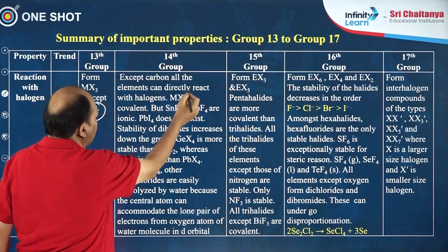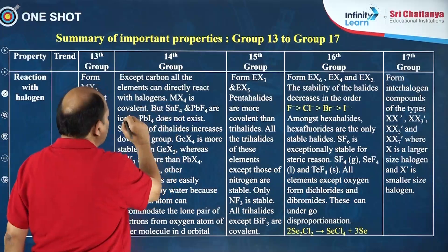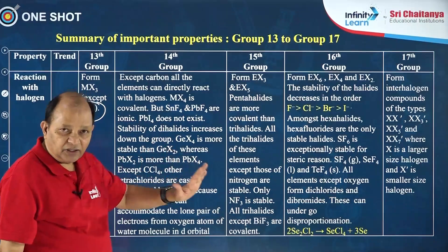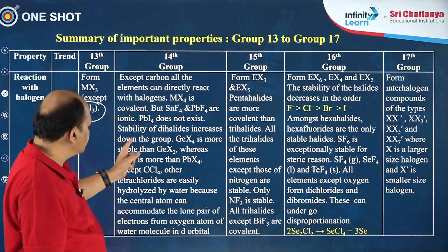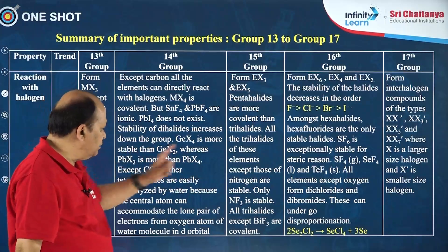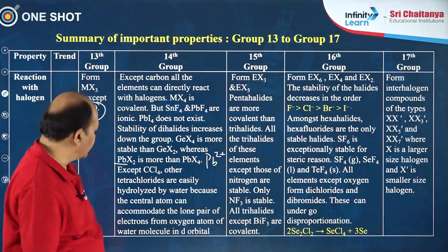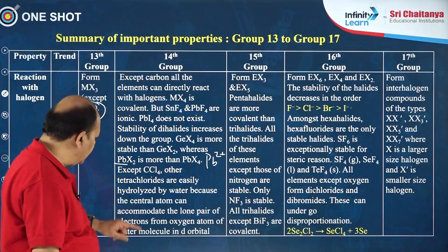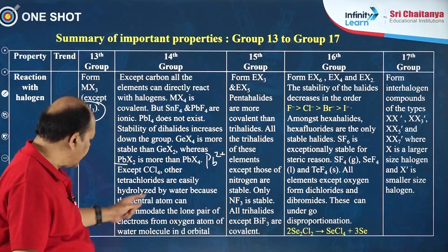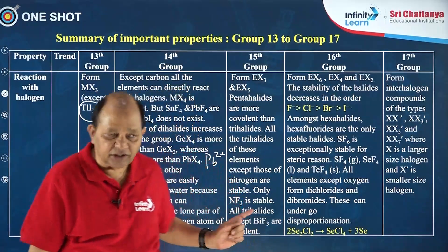Concerning the halides of group 14, except carbon, all elements can directly react with halogens to form the corresponding halides. Usually MX4 is covalent, but SnF4 and PbF4 are ionic, and PbI4 does not exist. Stability of dihalides increases down the group; GeX4 is more stable than GeX2, whereas PbX2 is more stable than PbX4. The stability of Pb²⁺ compounds is due to the inert pair effect. Except carbon tetrachloride, the other tetrachlorides are easily hydrolysed by water because the central atom can accommodate lone pairs from oxygen due to the presence of d orbitals in group 14 elements.